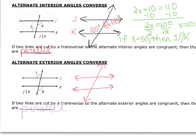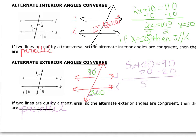We have some alternate exterior angles: one is 90 degrees, and the other is 5x plus 20. If the lines are parallel, these angles will be the same measurement. Set the expression equal to the measurement and solve: 5x plus 20 equals 90, so 5x equals 70, and x equals 14. If and only if x is 14, then j is parallel to k.